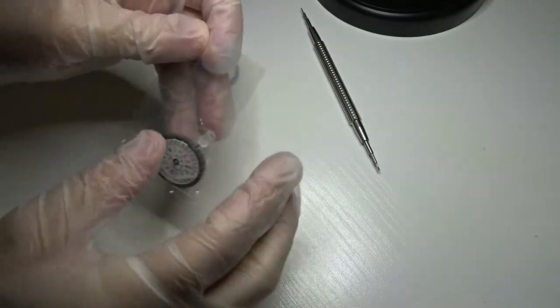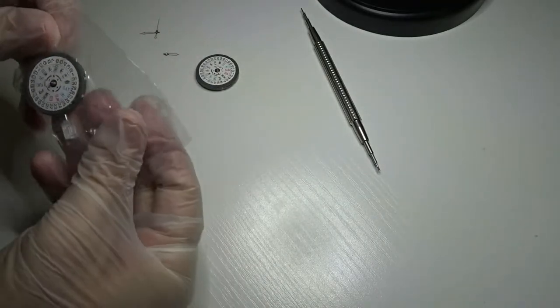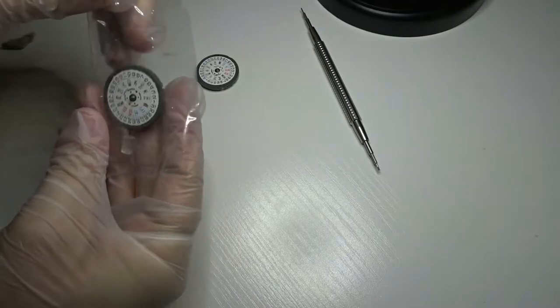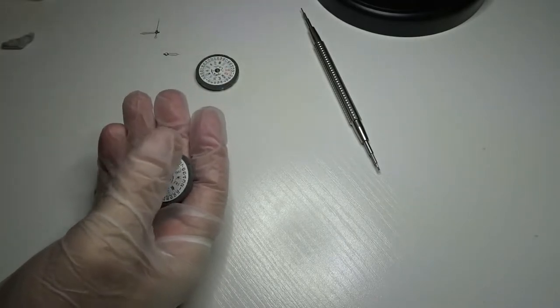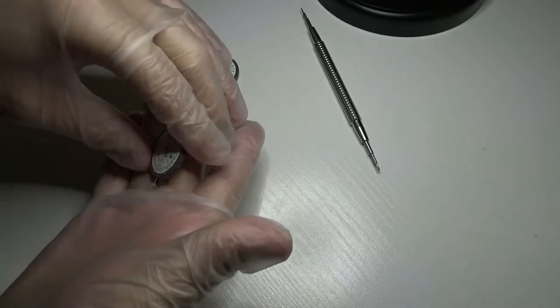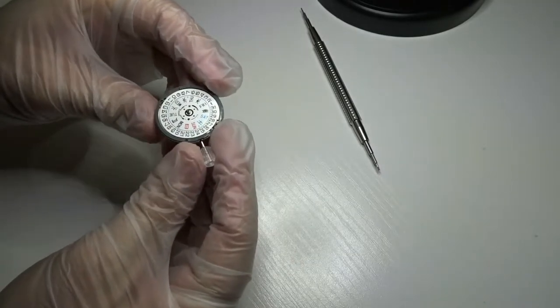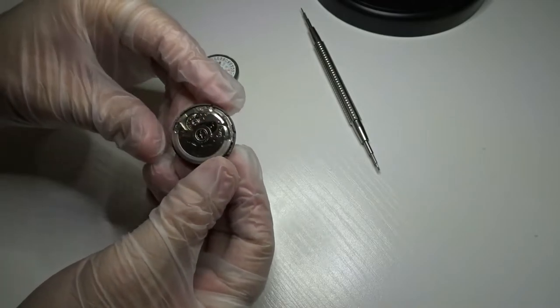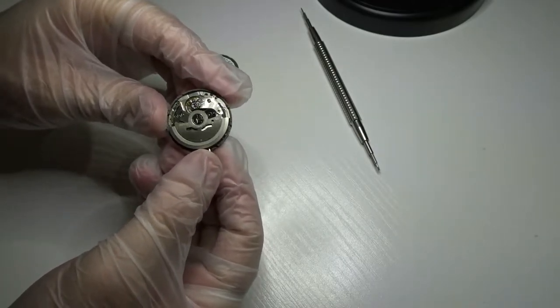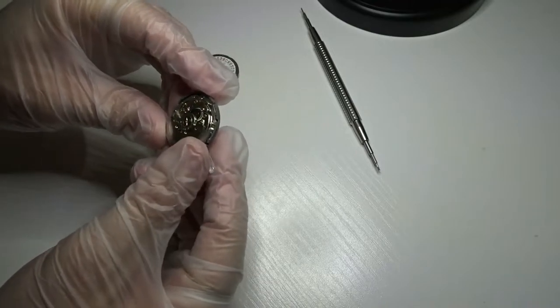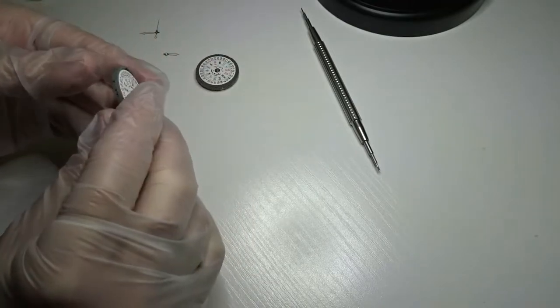So this is a new movement, NH36, also with Kanji daywheel. And I've got it from a seller on eBay. I've purchased several movements from that seller and I haven't had any issues at all. The seller is local to me and the movements get to me pretty quick.